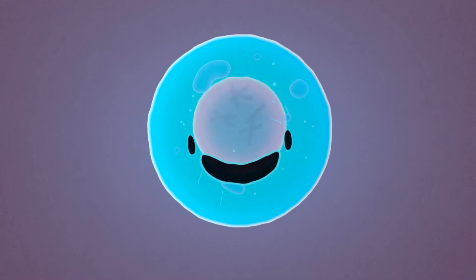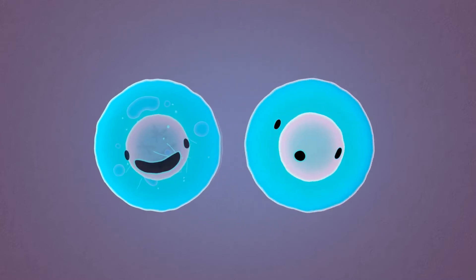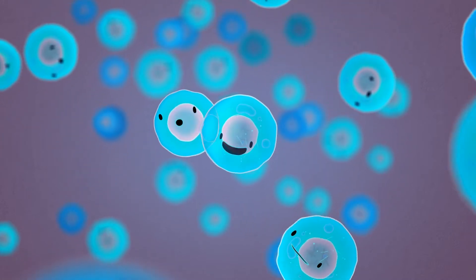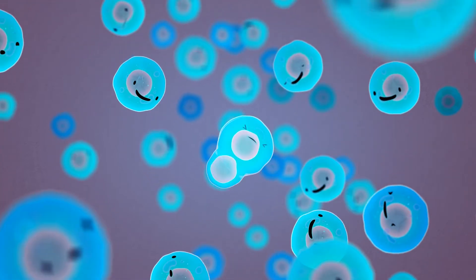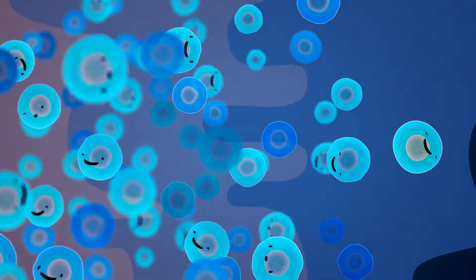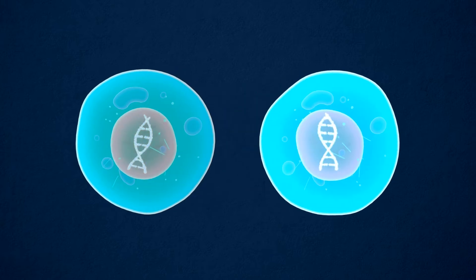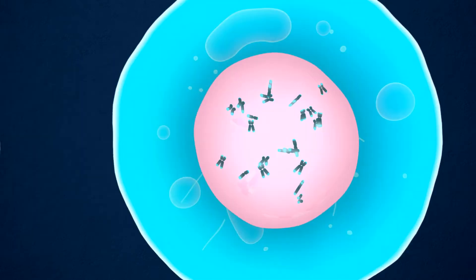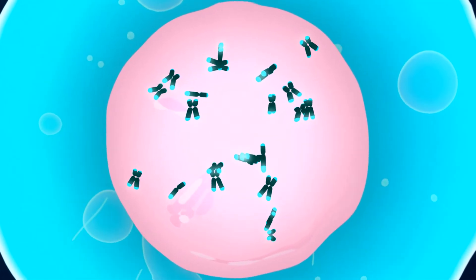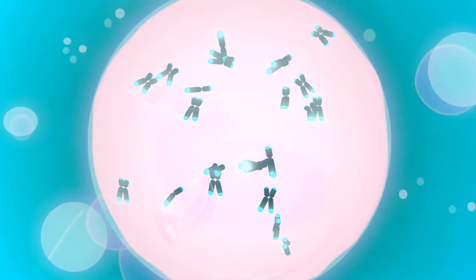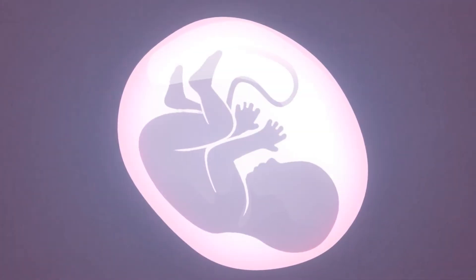We all start as a single cell that divides and divides and divides. An average human lives through 10 quadrillion cell divisions, and in every division the cells need to copy the DNA blueprint composed of 46 chromosomes that encodes all the information to make a fully grown human being.